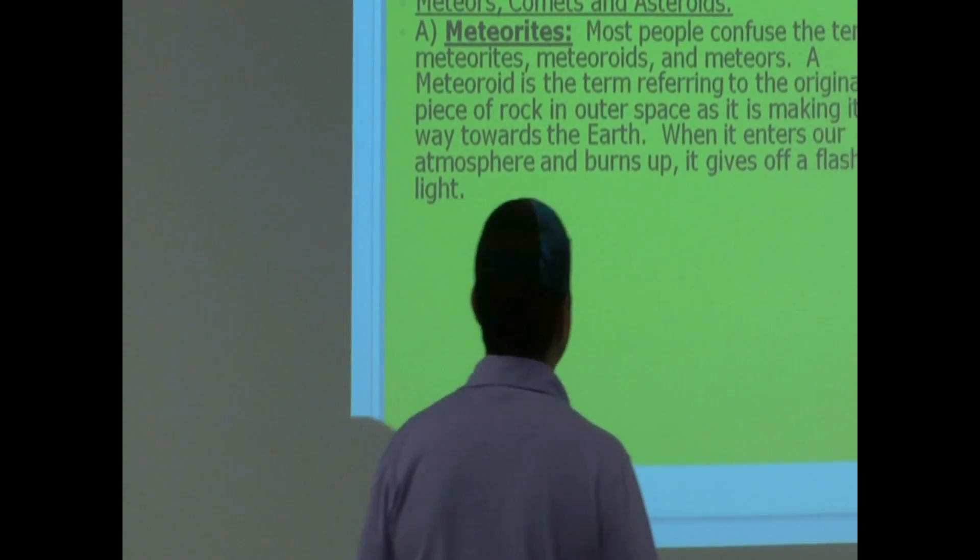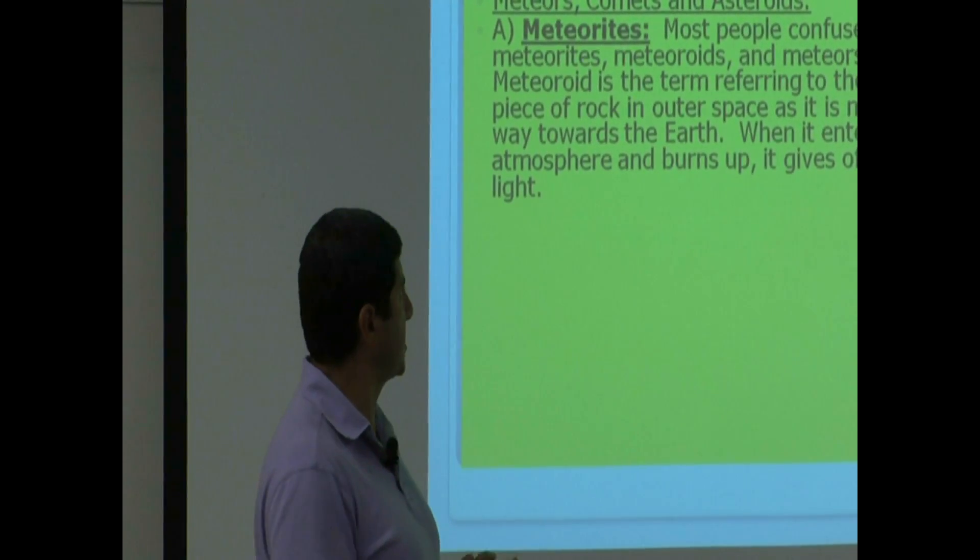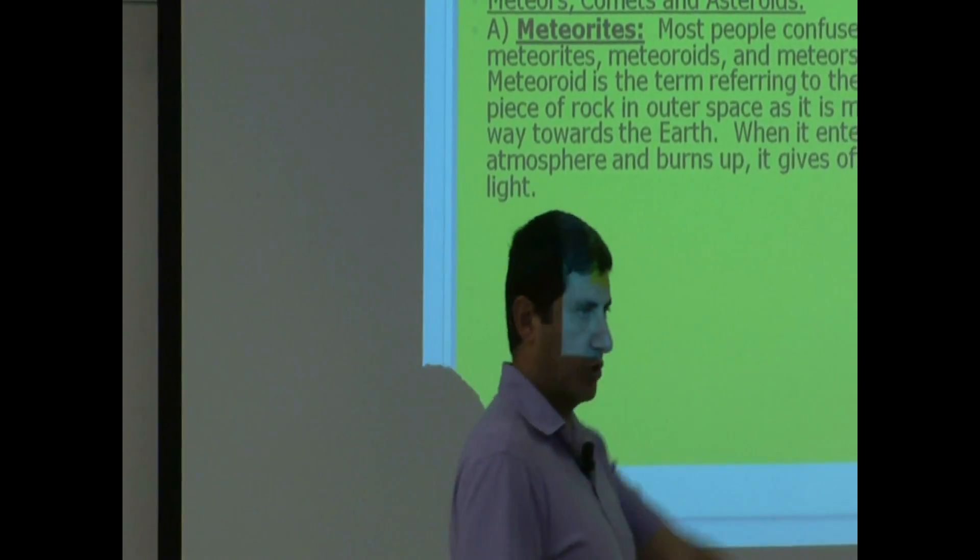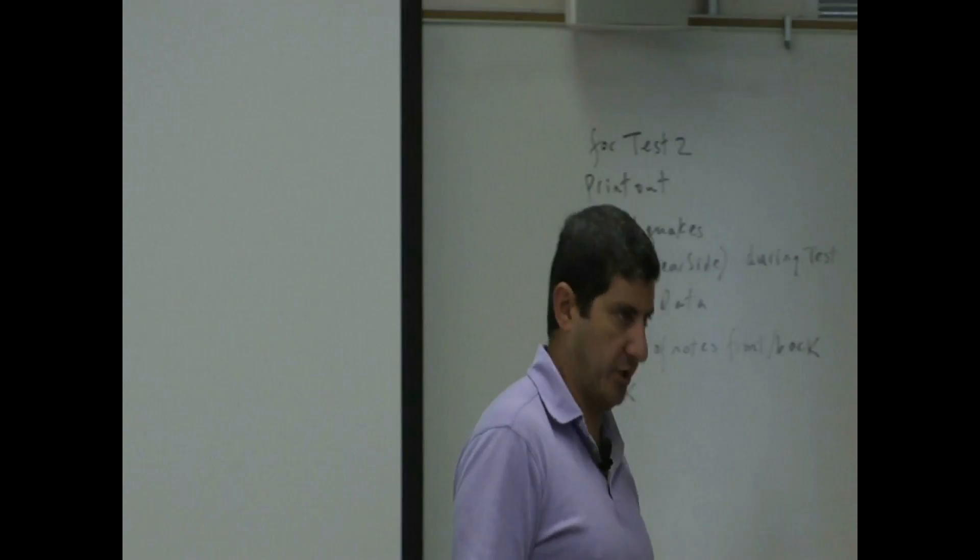A meteoroid is the term referring to the original piece of rock in outer space as it is making its way towards the earth. When that rock is in outer space, we call it meteoroid.